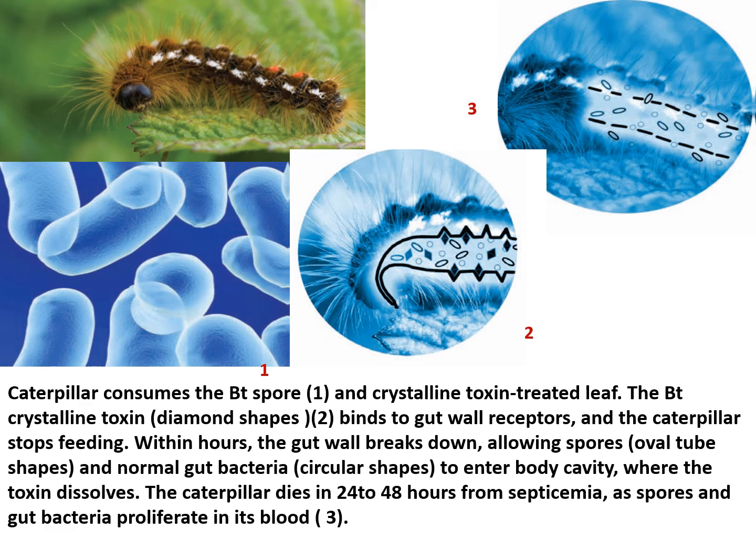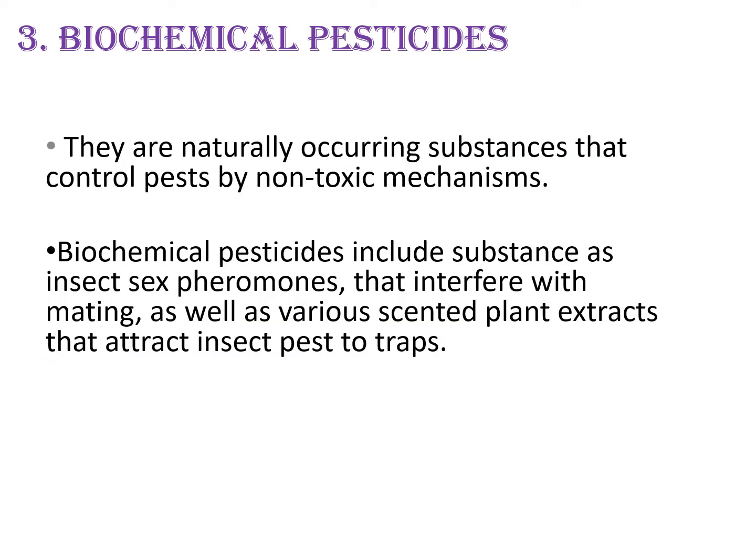This is the mechanism. The caterpillar consumes the Bt spores and crystalline toxin-treated leaves. The Bacillus thuringiensis crystalline toxin, which shows a diamond shape, binds to the gut wall receptors and the caterpillar stops feeding. Within hours, the gut wall breaks down, allowing spores and normal gut bacteria to enter the body cavity where the toxin dissolves, and the caterpillar dies within 24 to 48 hours from septicemia as spores and gut bacteria proliferate in its blood.